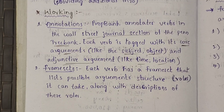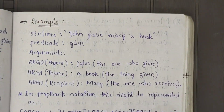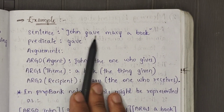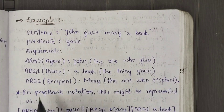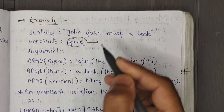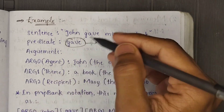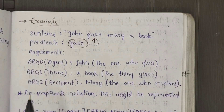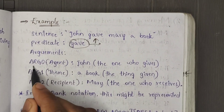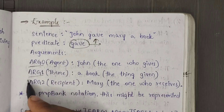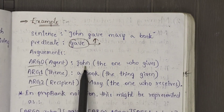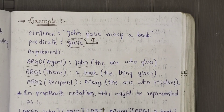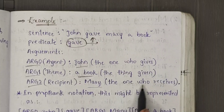Example: the sentence is 'John gave Mary a book.' Here, the predicate is 'gave' — the action. Gave represents a giving situation. The arguments are: Argument 0 — the agent, John, the one who gives; Argument 1 — a book, the thing given; Argument 2 — Mary, the one who receives.